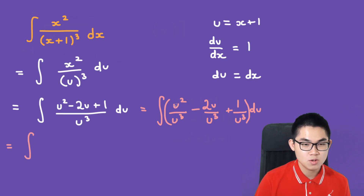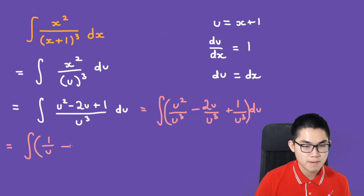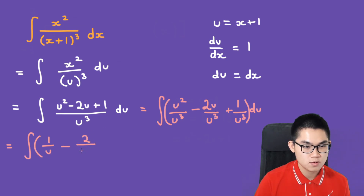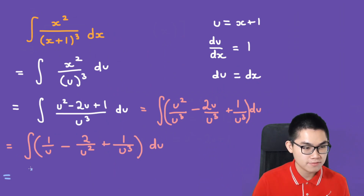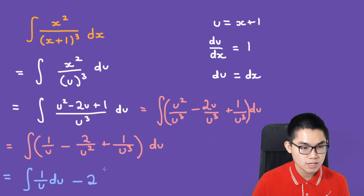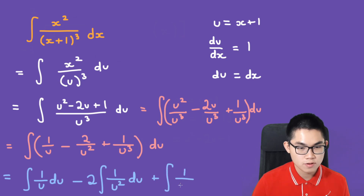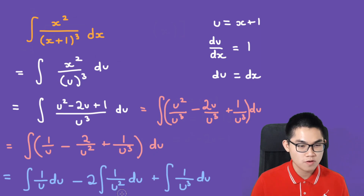Simplifying each term: u squared over u cubed is 1/u, minus 2u over u cubed is 2/u squared, plus 1 over u cubed. Then we split the integral apart: the integral of 1/u du, minus 2 times the integral of 1/u² du, plus the integral of 1/u³ du.